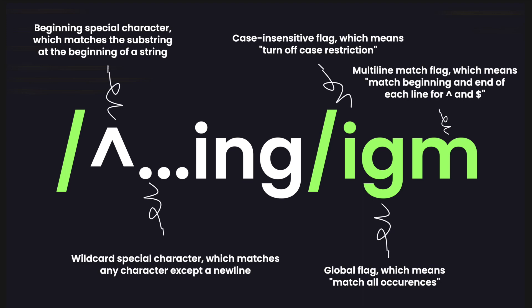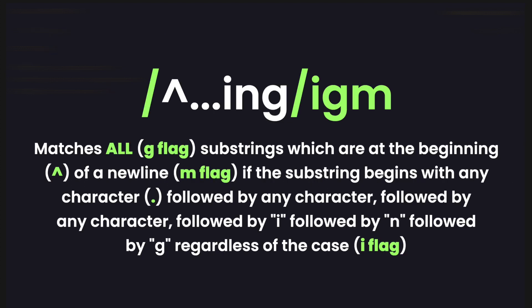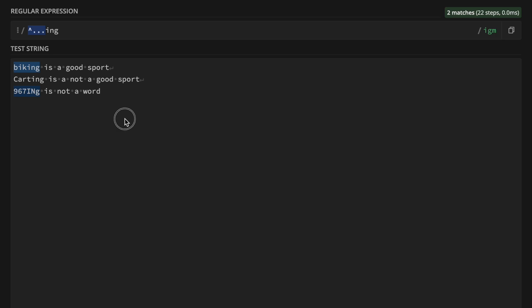The pattern has the caret as the beginning special character, then the period special character three times (dot dot dot), then 'ing', with flags i, g, and m. The order of flags doesn't matter. The interpretation: in a string, if that string begins with three characters of any kind — represented by the three dots — followed by 'ing', either at the beginning of the string or the beginning of a line, it's a match.